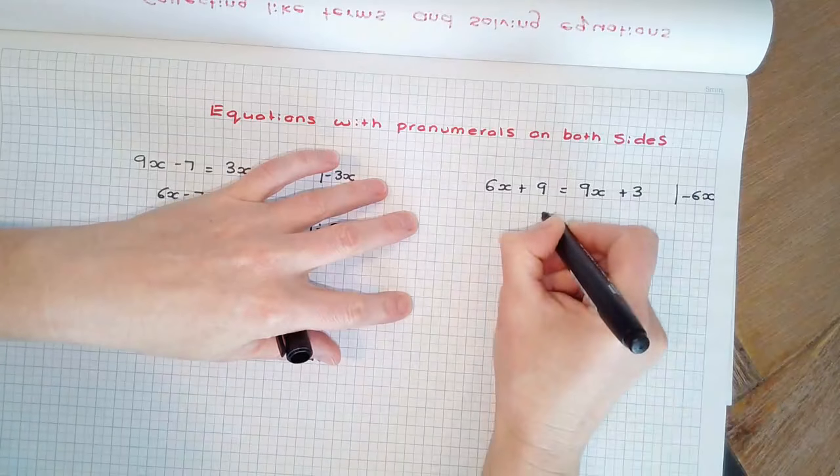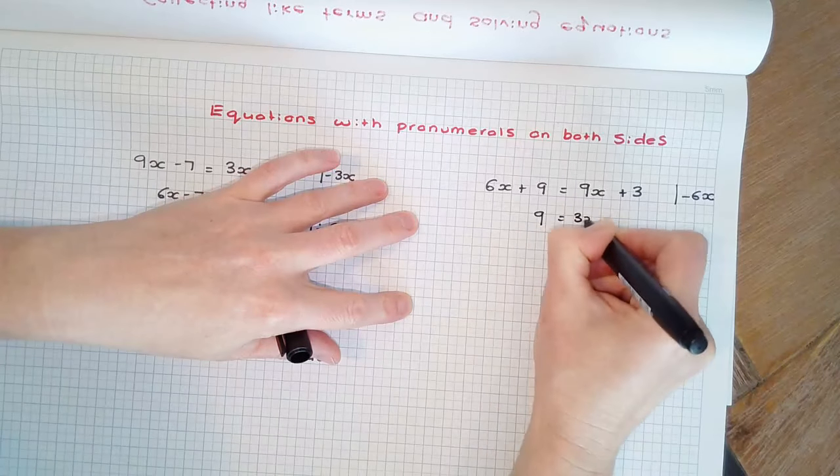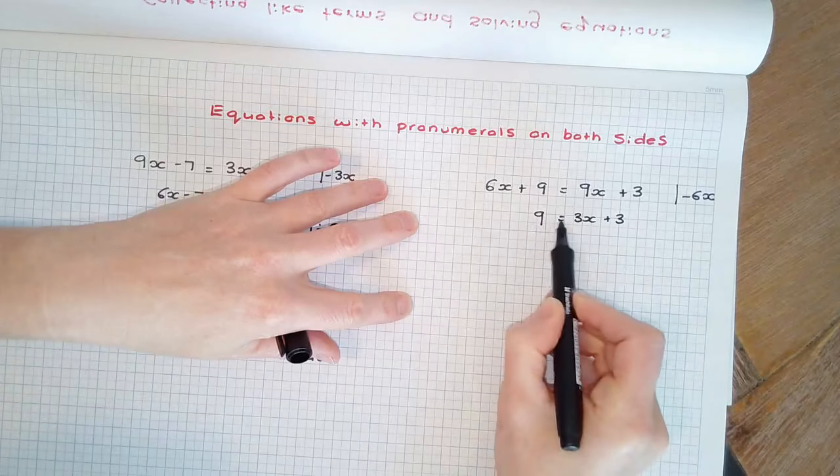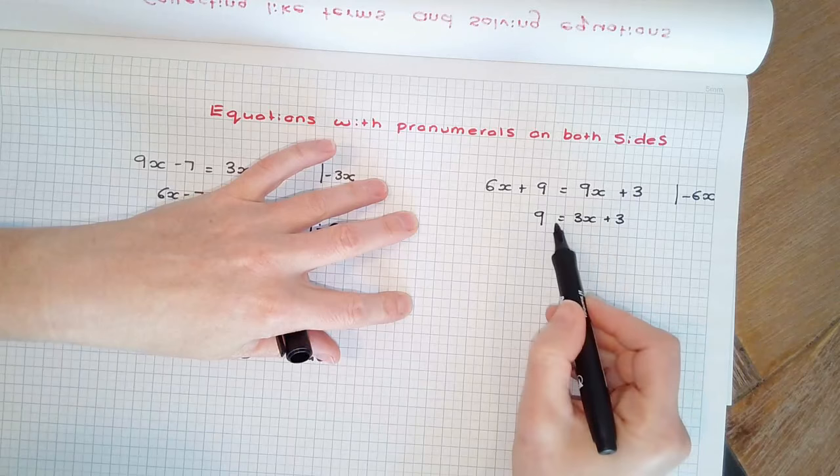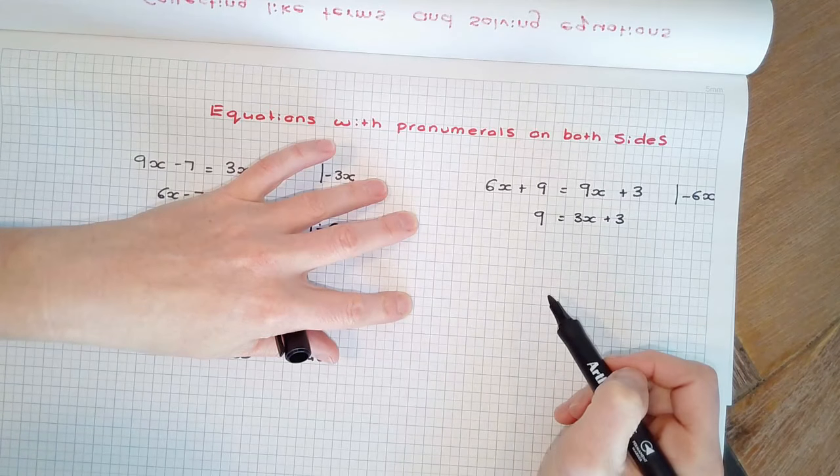Subtracting 6x from each side, I end up with 9 equals 3x plus 3. Now, it's a normal two-step equation. It just happens that our pronumerals on the right-hand side.